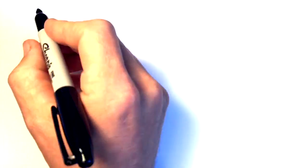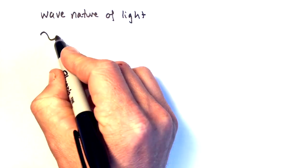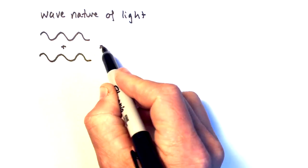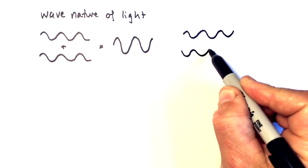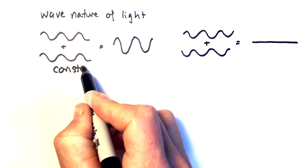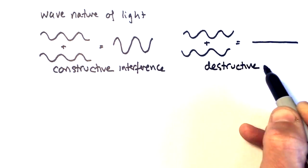What about the wave nature of light? Well, waves can interfere. Two waves where the peaks and valleys align interfere constructively, creating a higher amplitude wave. Or if the peaks of one fill the valleys of the other, we have destructive interference.